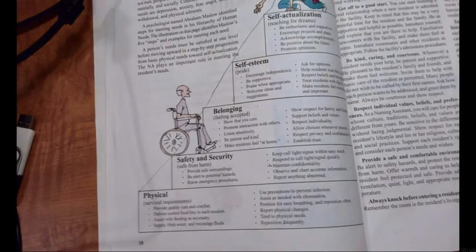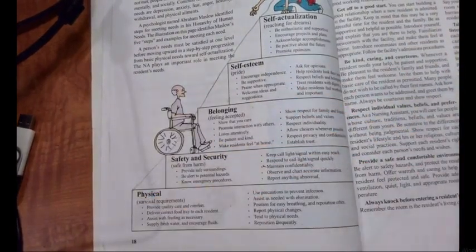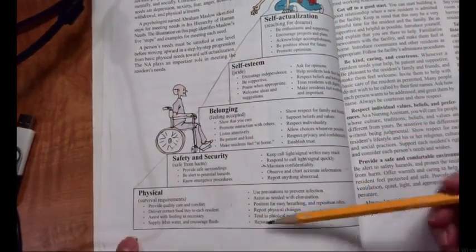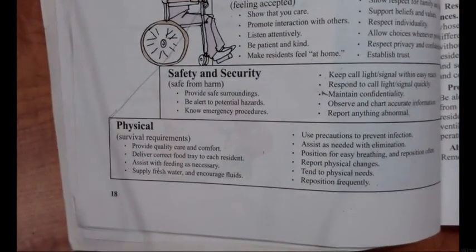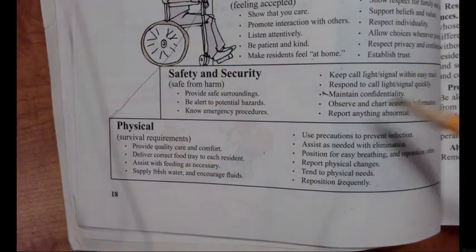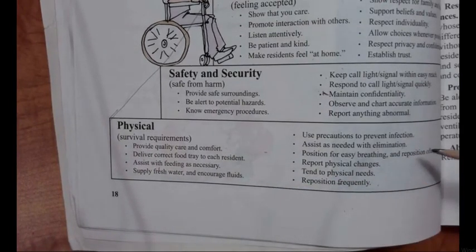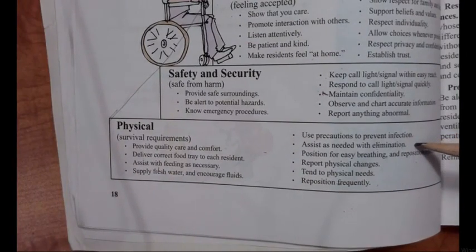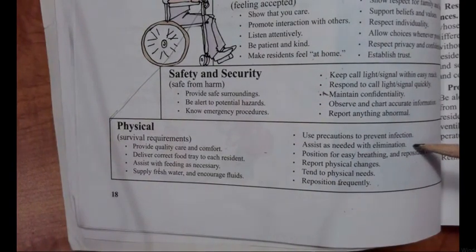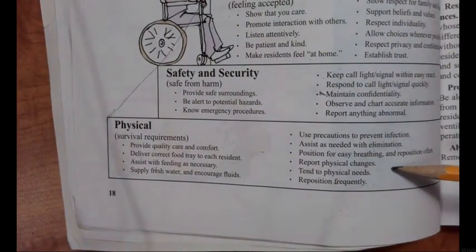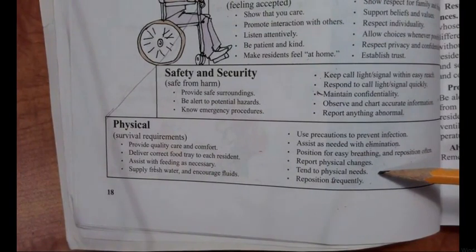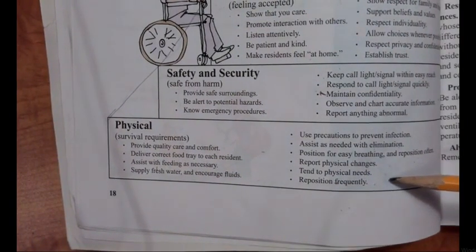On page 18 of your book they have Maslow's hierarchy in stair steps. In healthcare, for the physical bottom level: deliver the correct food tray, assist with feeding as necessary, give them water if they can't get up and encourage them to drink. Use precautions to prevent infection. Assist as needed with elimination — take them to the toilet. Position for easy breathing. Report physical changes. Tend to physical needs and reposition those people frequently that can't move themselves.